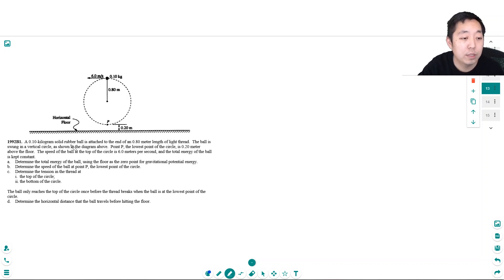So a 0.1 kilogram solid rubber ball is attached at the end of a 0.8 meter length of light thread. The ball is swung in a vertical circle as shown in the diagram above. Point P, the lowest point of the circle, is 0.2 meters above the floor. The speed of the ball at the top of the circle is 6 meters per second and the total energy of the ball is kept constant.